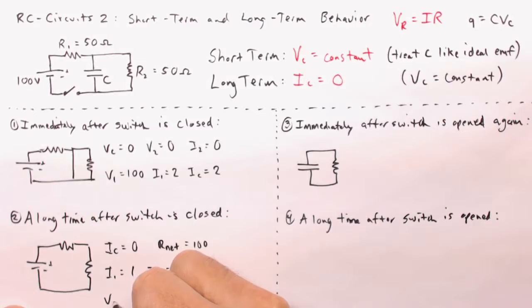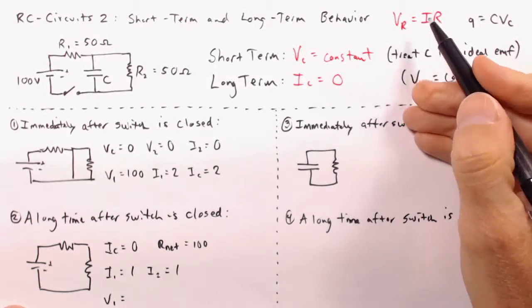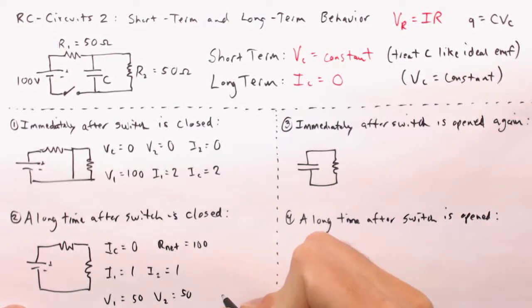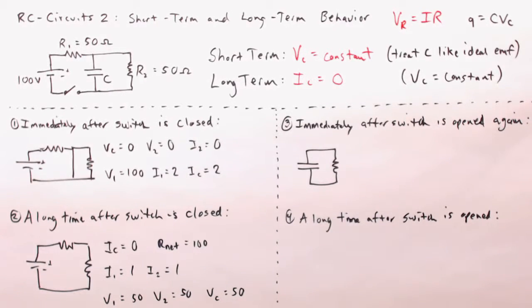From here, we can find the voltage on number one and number two, and hey, it's just 50 times one, so it's going to be 50 volts on number one, and it's going to be 50 volts on number two. And last but not least is VC, but hey, C is in parallel to R2, and if R2's got 50 volts, then VC must also have 50 volts.